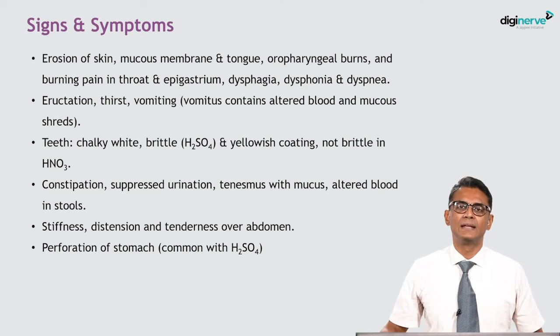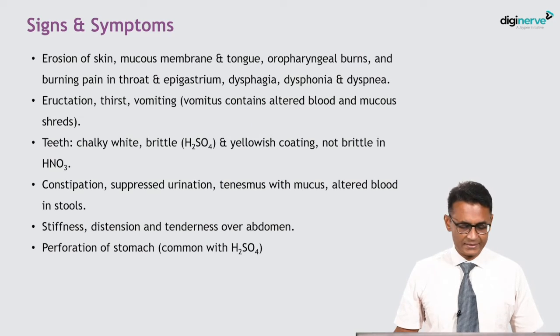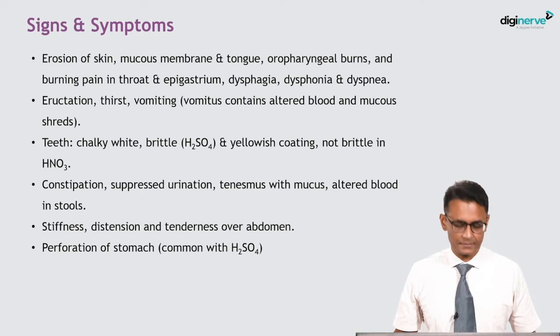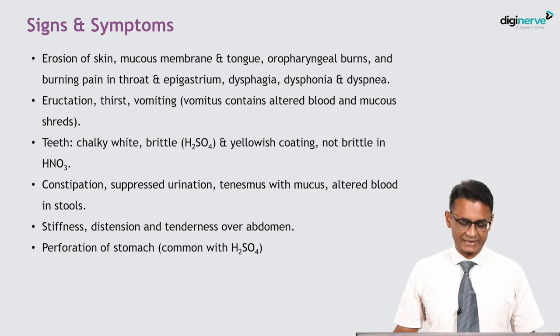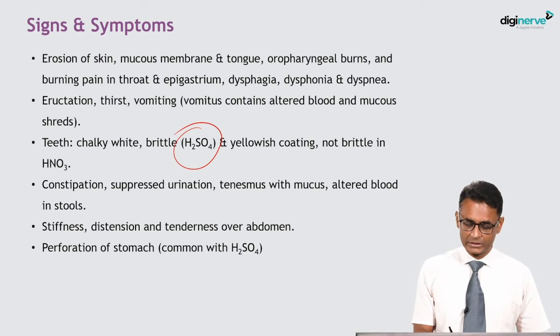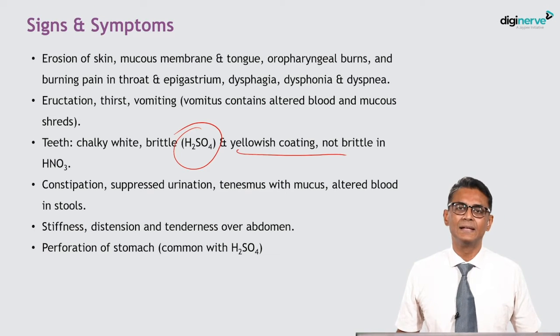What are the signs and symptoms in acid ingestion? There is corrosion of the skin, mucous membrane, and tongue. There will be oropharyngeal burns and burning pain in the throat and epigastrium, dysphagia, dysphonia, and dyspnea. Eructation, thirst, and vomiting — the vomitus may contain altered blood and mucous membranes. The teeth appear chalky white and brittle in H2SO4 poisoning, and show a yellowish coating and are not brittle in HNO3 (nitric acid) poisoning.